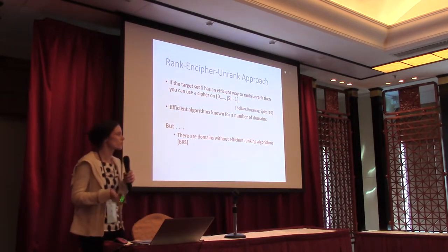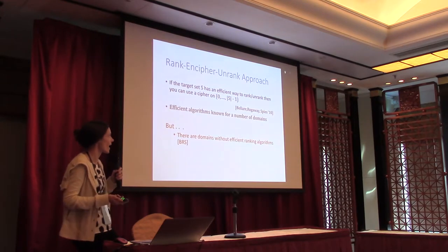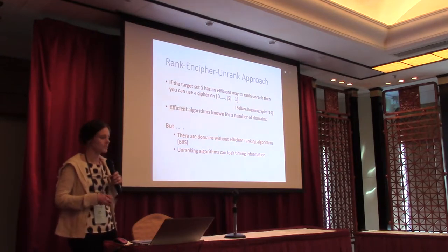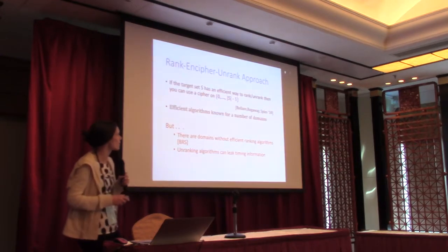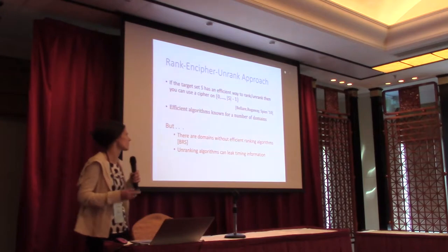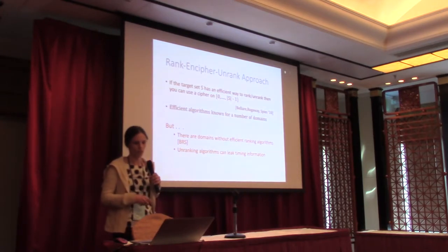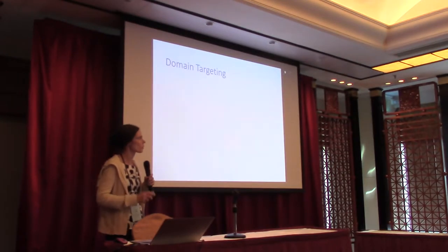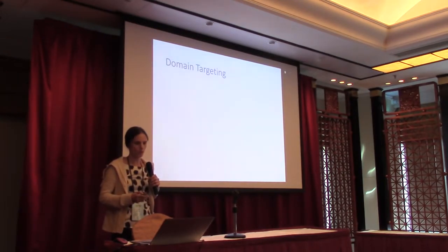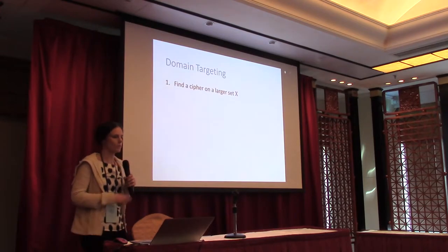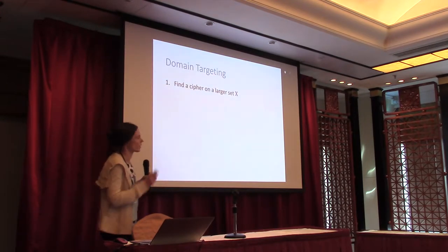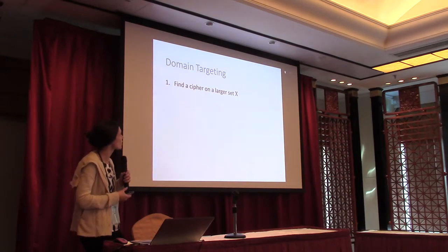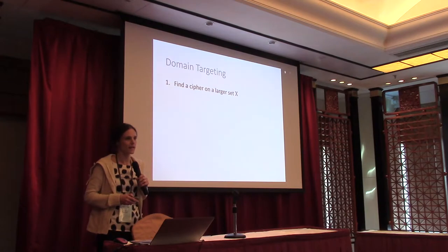We're going to be specifically looking at the setup where you don't have efficient ranking algorithms. Also, sometimes these unranking algorithms can lead to timing information, so even if there is an efficient ranking algorithm, you may not want to use it. One way to approach this problem is what we call domain targeting — an existing approach. We're going to find a cipher on a larger set X that includes our target set.